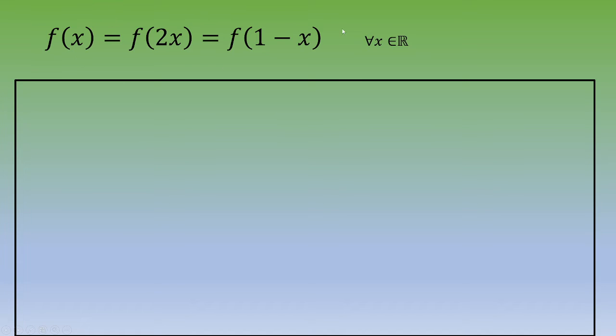We would like to end up with f(x) = f(x + something). So we're going to start with f(x) = f(2x).